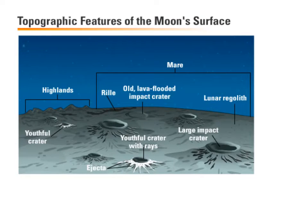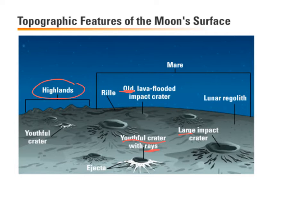Let's take a look at some of the topographic features of the Moon. We talked about craters already — we can have large craters and small craters. Some of the older craters are going to be lava-flooded because we had some volcanic activity while the Moon was forming. These younger craters, the youthful ones, we talked about these rays of ejecta being seen. We have highlands on the Moon because when it was forming, there were parts that were kind of pushed upwards and we made some mountains. We also have some trenches, and we call those rills.